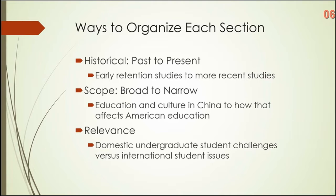There are ways to organize each section. Broad to narrow is what that inverted pyramid represents. You might look at education and culture in China and how it affects American education — starting broadly with Chinese culture and how it informs education. Most nationalized educational systems are a direct reflection of national culture, mores, and norms. Then you narrow down to how these things inform one Chinese student who comes to the U.S.